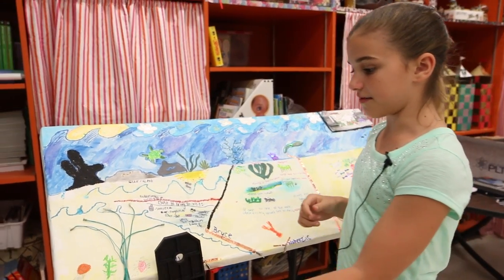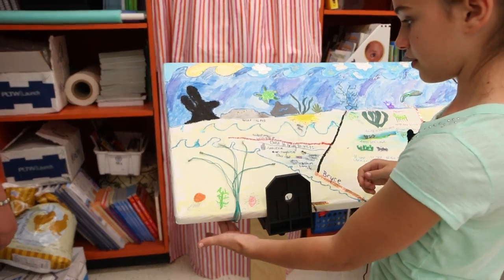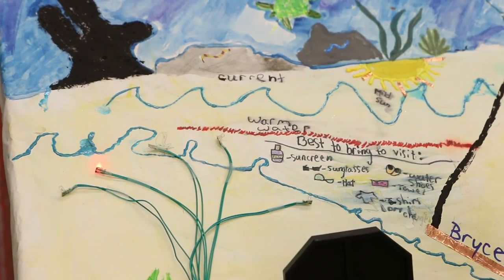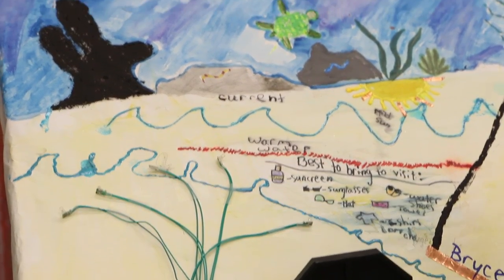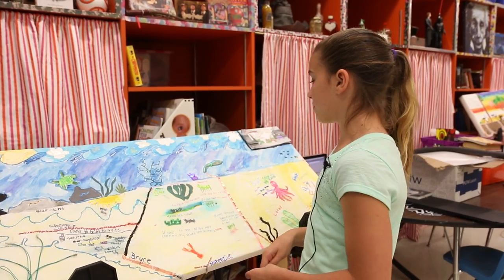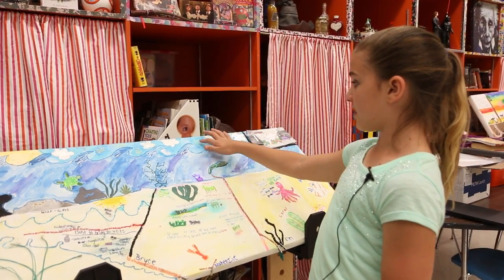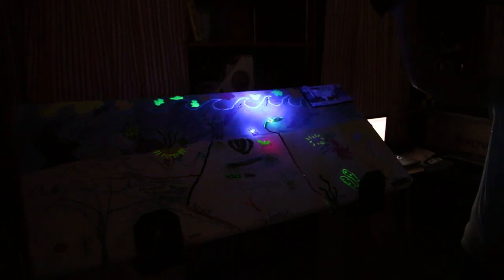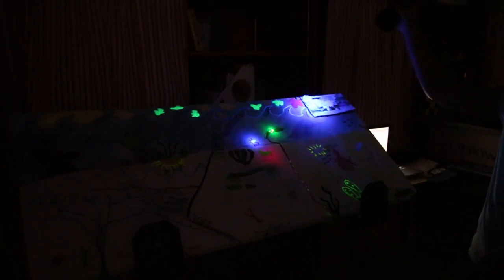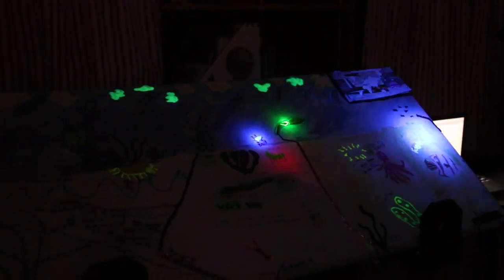And we have lights up here in the coral and in the eel. Over here we have a touch sensor, which when you tap it, the lights light up. We also have some glow in the dark clouds, and when you turn the lights off they glow so you can see the clouds at night.